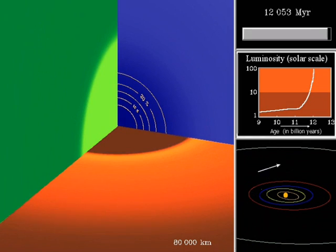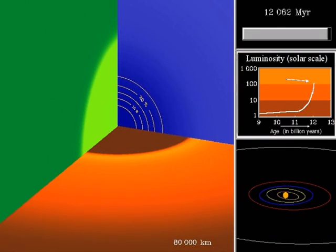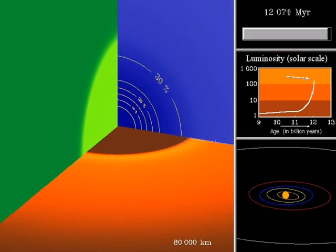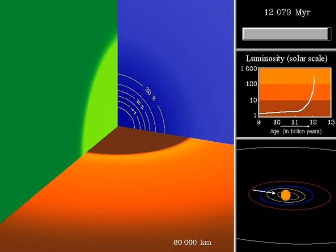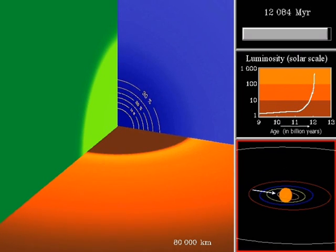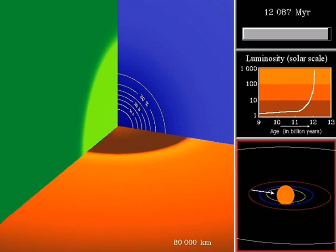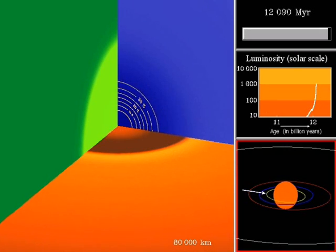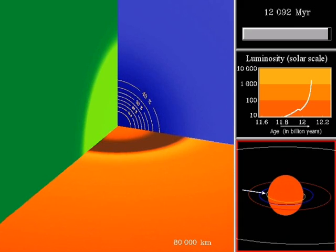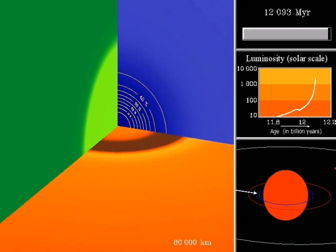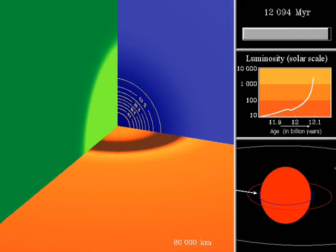In connection with the swelling of the Sun, its brightness also increases strongly. Because of the increase of its size, the Sun is engulfing the nearest planets. Mercury first, then Venus. The Earth is spared this time, but life has been extinguished long ago due to the strong increase of the solar brightness.